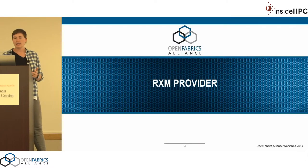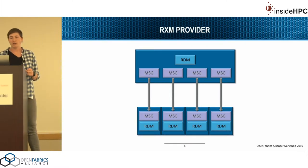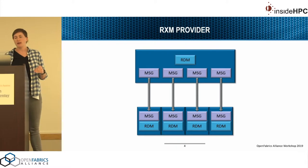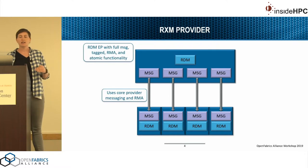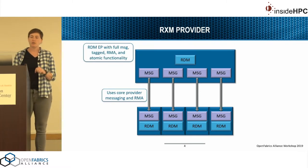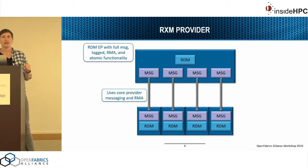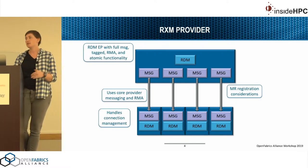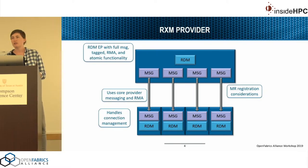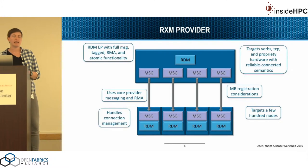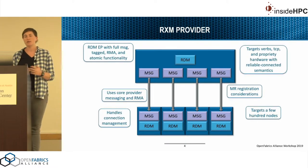First up is the RxM provider. Like I said, this is reliable datagram using the message core provider. We have N number of message endpoints internally in order to handle connection multiplexing for that core provider, but we expose that RDM endpoint to the app. It basically adds an RDM endpoint that has full message tagged RMA and atomic functionality but using that core provider message endpoint. The main protocols we have to implement handle connection management and connection multiplexing, targeting verbs, TCP, or basically any proprietary hardware with reliable connected semantics. With the RxM provider we're targeting a few hundred nodes.